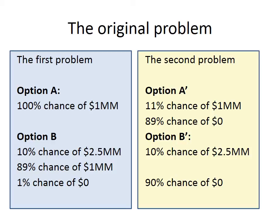In the second problem, the yellow box, we're comparing two gambles. In the first gamble you have an 11% chance of winning $1 million; in the second, a 10% chance of $2.5 million. The difference between 10% and 11% doesn't seem very large, but the difference between $2.5 million and $1 million is very large. So the prediction is that people would pick Option B in the second problem set — and that's exactly what Maurice Allais found in his research.